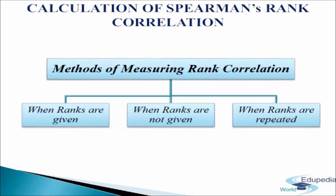There are three types of cases to calculate the rank correlation: first, when ranks are given; second, when ranks are not given; and third, when ranks are repeated. We will study all three methods one by one in the coming slides.